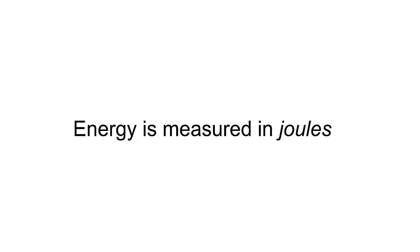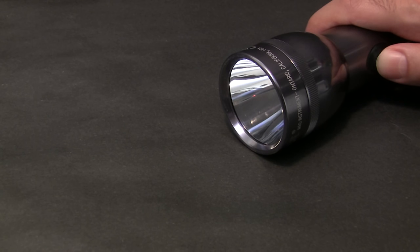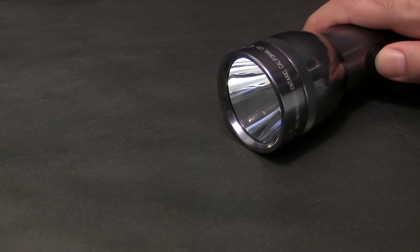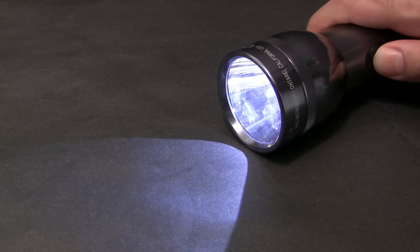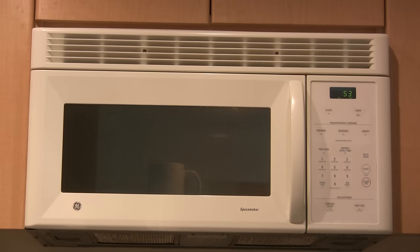Those are some examples of potential energy. And it's important to know that we measure energy with units called joules. Joules can be used to describe the amount of energy it takes to do a lot of different things. One joule is enough energy to power this flashlight for one second. Three joules is enough energy to power this flashlight for three seconds. And 90,000 joules is the energy required to power this microwave for one minute to make a cup of tea. We'll talk more about energy and joules later in the video.